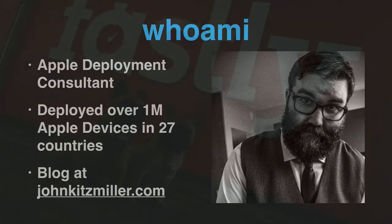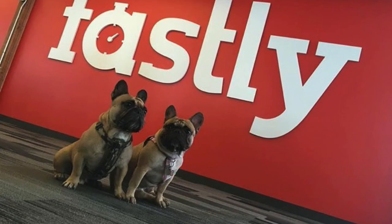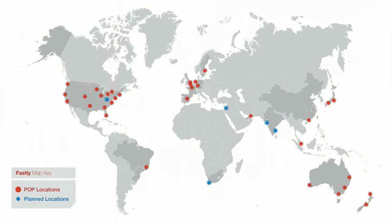I currently work full-time for a company called Fastly. We're in the San Francisco Bay Area — we're a content delivery network. We actually have an office here in London as well, and we have points of presence all over the world to help deliver content. We actually have two here in London, which is pretty cool.